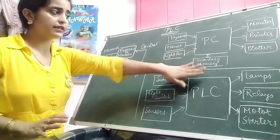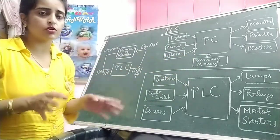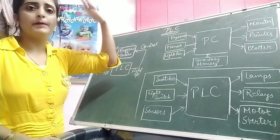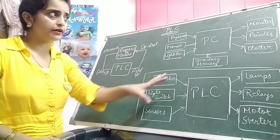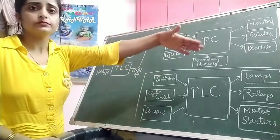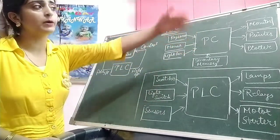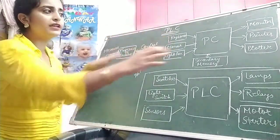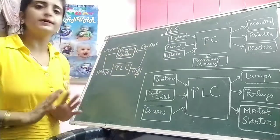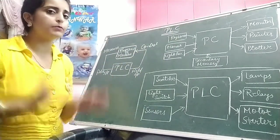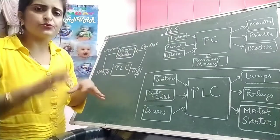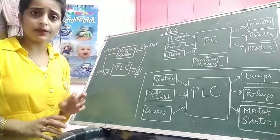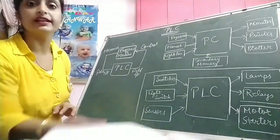The PC has secondary memory, RAM, and ROM. That is why the PC can memorize the things entered into it. For the output side, we have a monitor, printer, plotter — anything could be there. We are all familiar with this scenario of the personal computer. The PLC is very much similar to the PC, but it has some differences.